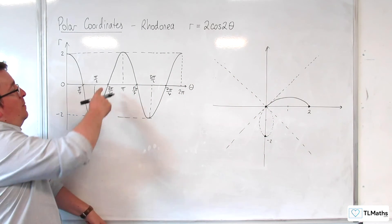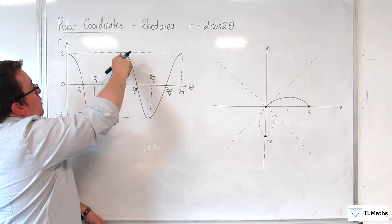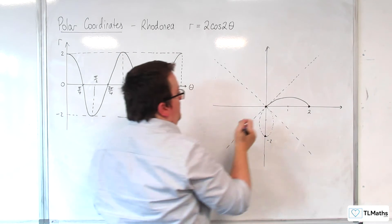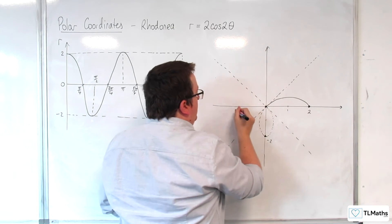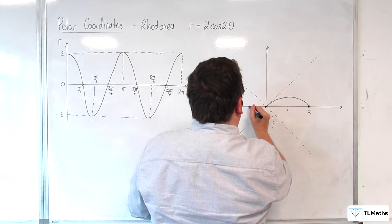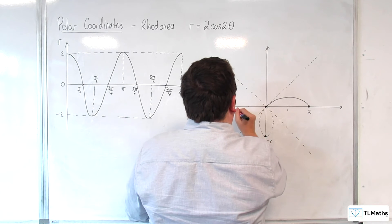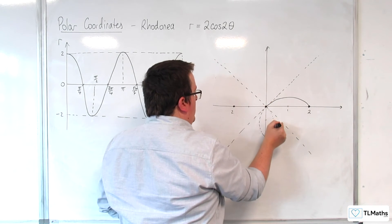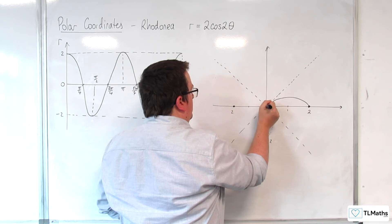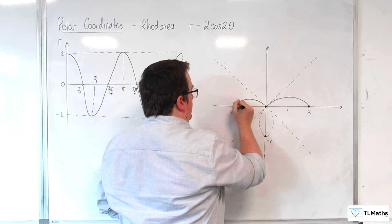Now r becomes positive again, and we're going up to 2 when theta is at pi. So theta's at pi, we are at 2. So, 1, 2 like so. So we get to this point, we're coming round here. Like that.